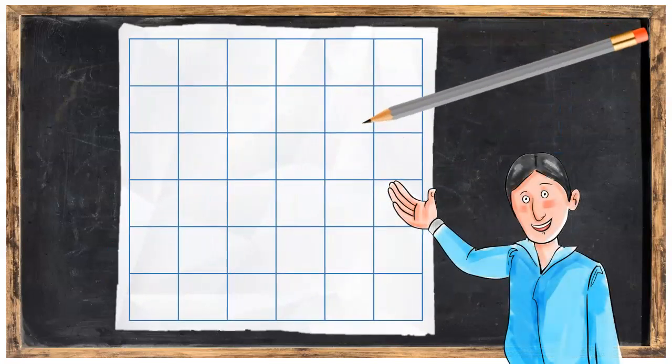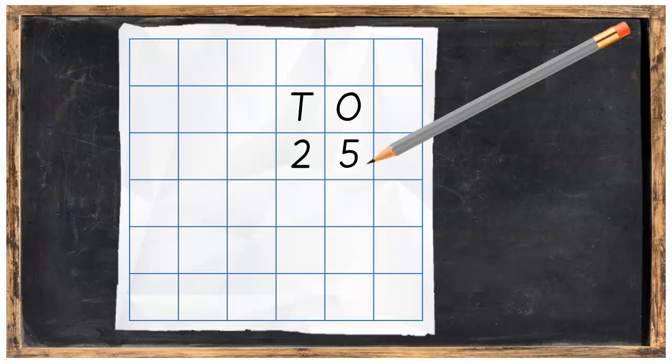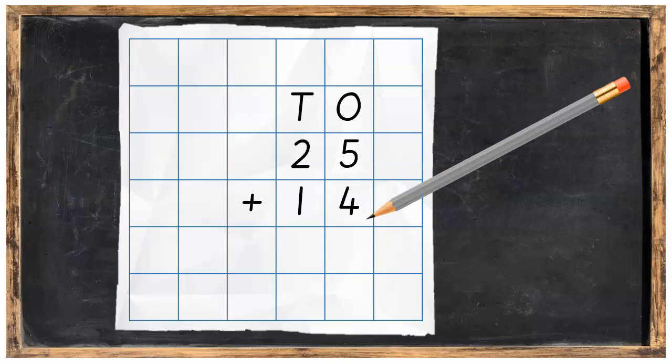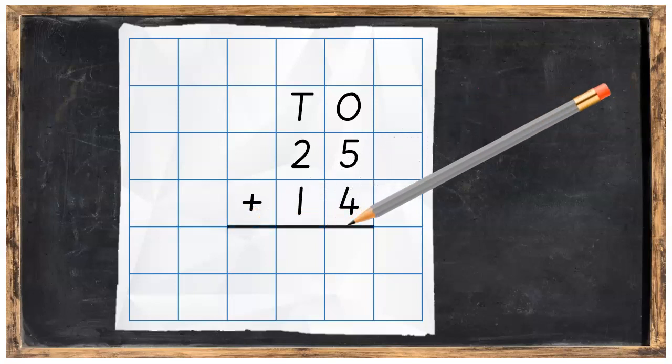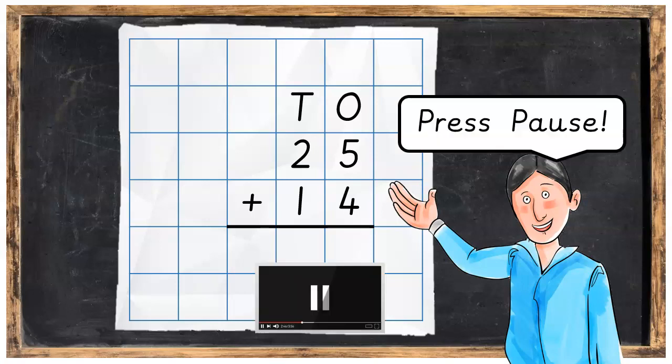Right, let's get started. The first thing I want you to do is put out your tens and ones on your lined maths paper. Underneath the T and O for tens and ones we're going to write 25, and then we're going to add 14 so we're going to write in plus 14. Underneath our sum we're going to write in a line. Get that much done by writing out your sum just like this. Press pause and then press play when you are ready.